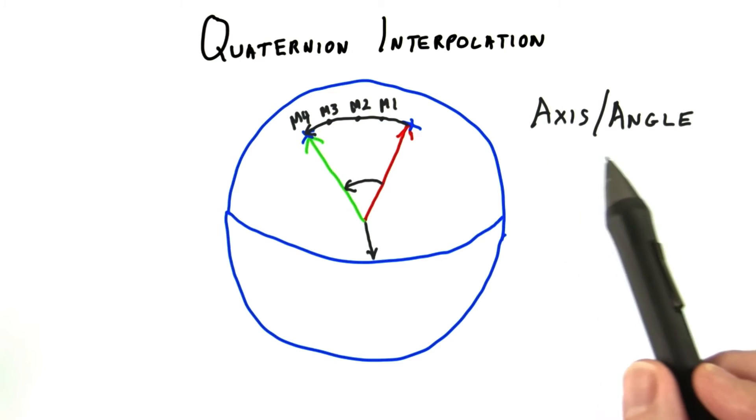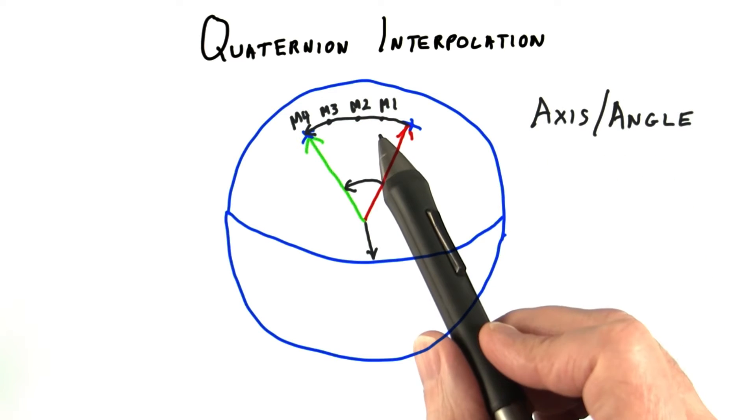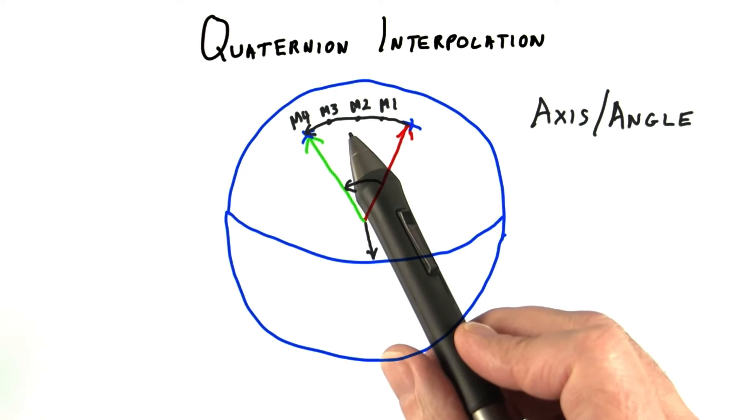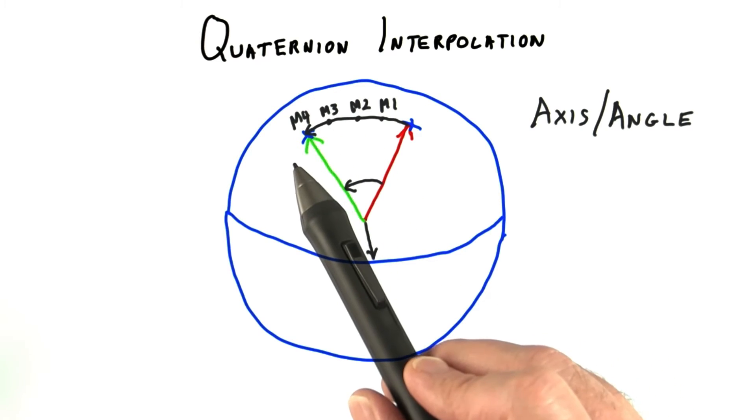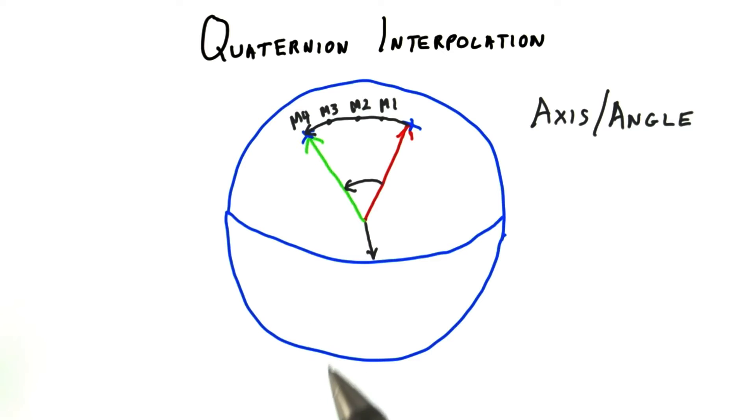Using an axis-angle scheme, you would go a quarter of the angle and form the matrix. Every frame would need to form a new matrix, which can get pricey. Creating each takes a number of trigonometric function calls.